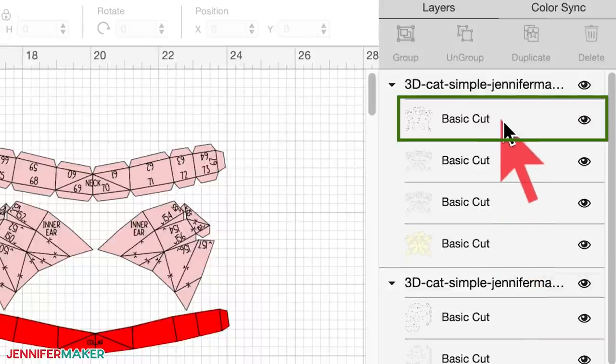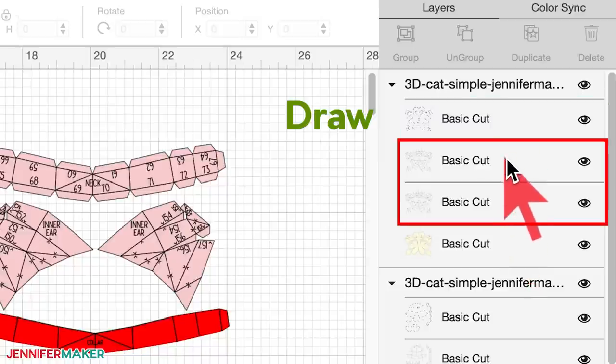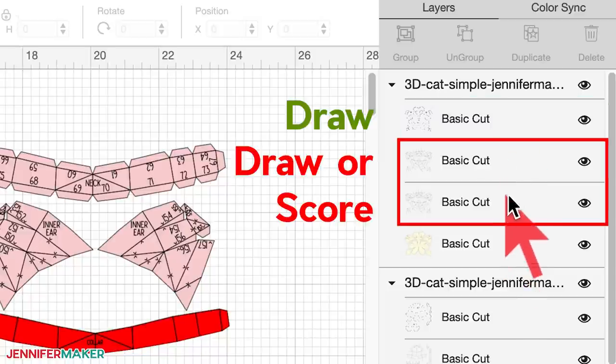The top layer is intended to be drawn, so all of your numbers can be put right onto the paper. The middle two layers can be drawn or scored. You get to decide. You would choose to make one a draw layer if you want to see your score lines better. And this is what I'm going to do in this video.